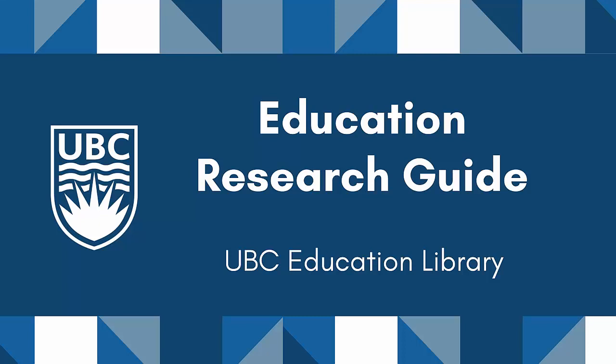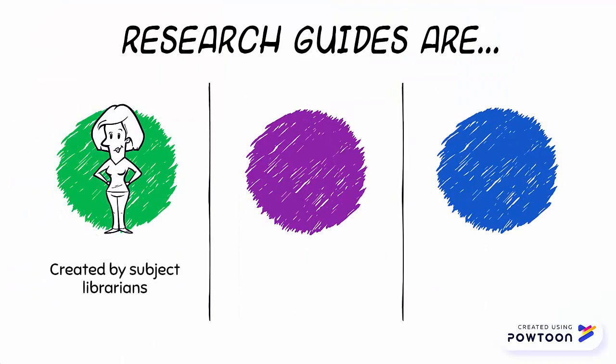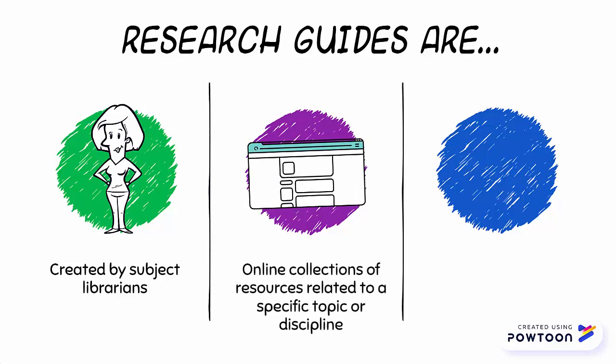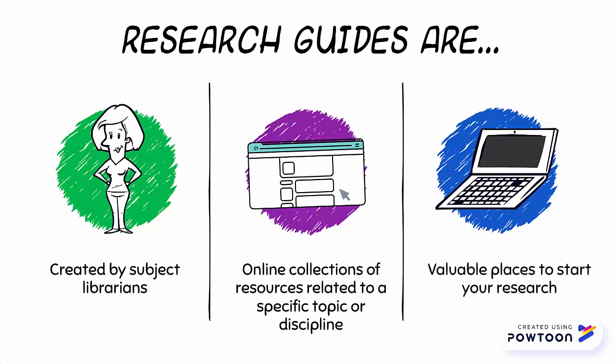In this video, I'm going to introduce you to the UBC Research Guides. I'll show you where to go to find the UBC guides for any subject, but we'll go into the Education Research Guide in more depth. Created by subject librarians, research guides are collections of resources related to a specific topic or discipline, and they are valuable resources when you need to start research within a certain field.